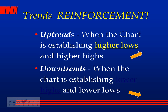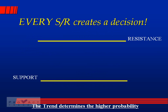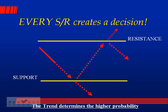The market reacts based on support or resistance. These reactions are called bounces, dips, and rallies, and they are extremely important. Every support and resistance point in the past creates a decision: as the market moves toward support, it has to decide — do we blow through it or do we react and turn? The trend determines the higher probability.